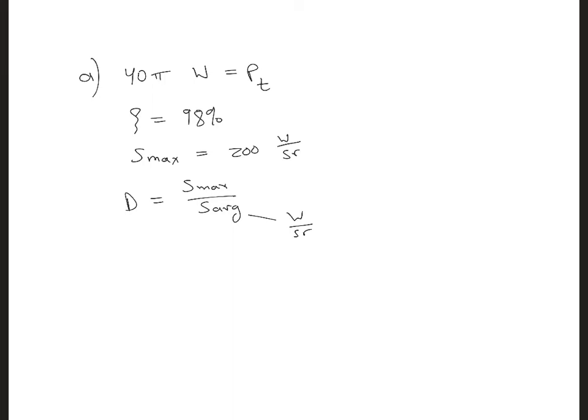This S average is the average power density that's radiated out equally in all directions, radiated by an isotropic antenna, which doesn't exist in real life. So to find S average, we need to know how much total power is radiated. Then we can divide that by the area of the sphere to find the power density.